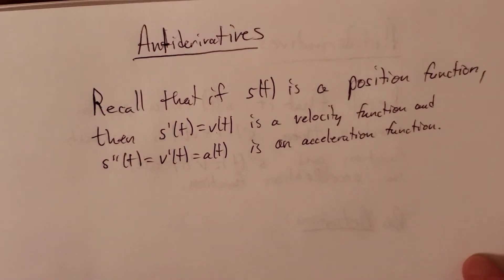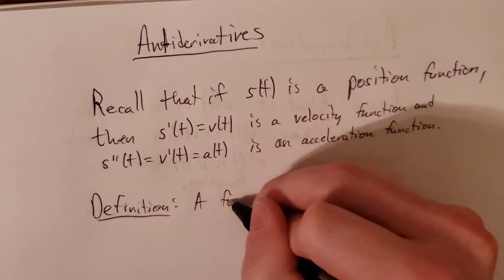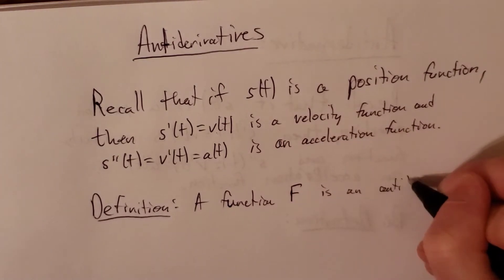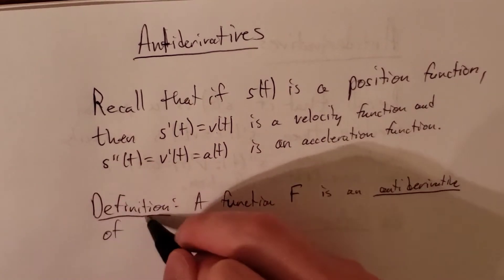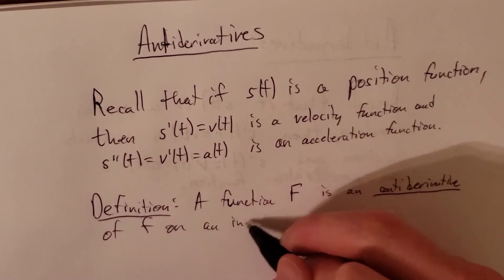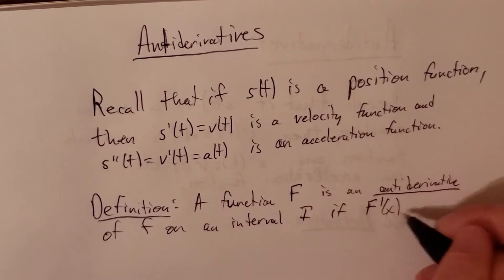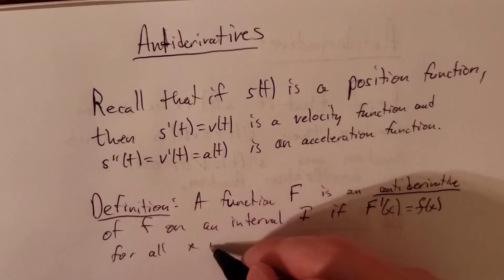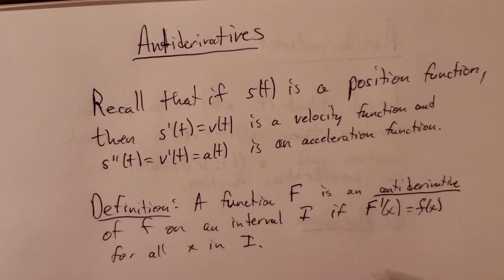If we had some way to reverse this derivative function, then we could do so. Let's write out a definition related to that. A function capital F is an antiderivative of f on an interval I if capital F prime of x is equal to lowercase f of x for all x in the interval I. So there is our official definition of an antiderivative.